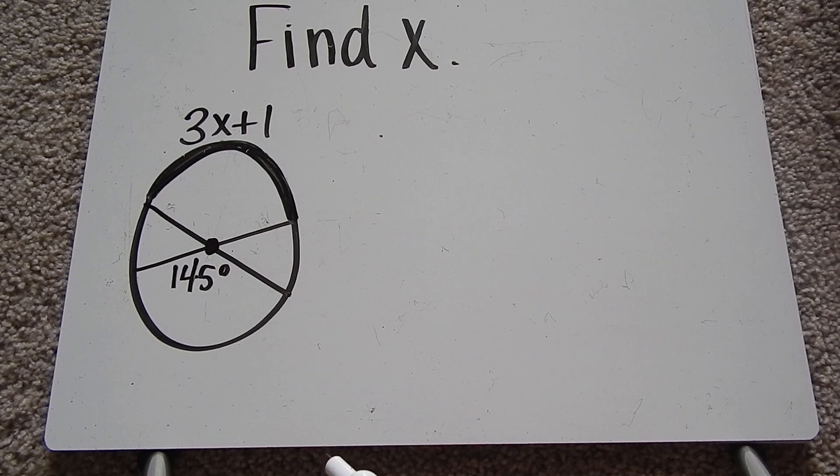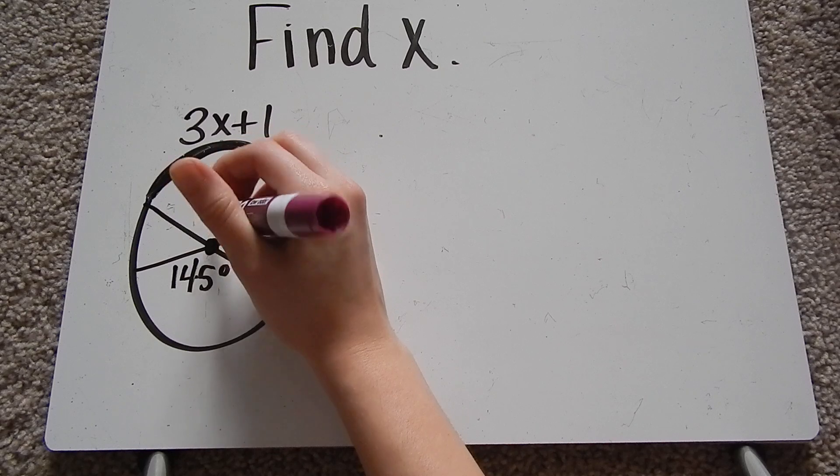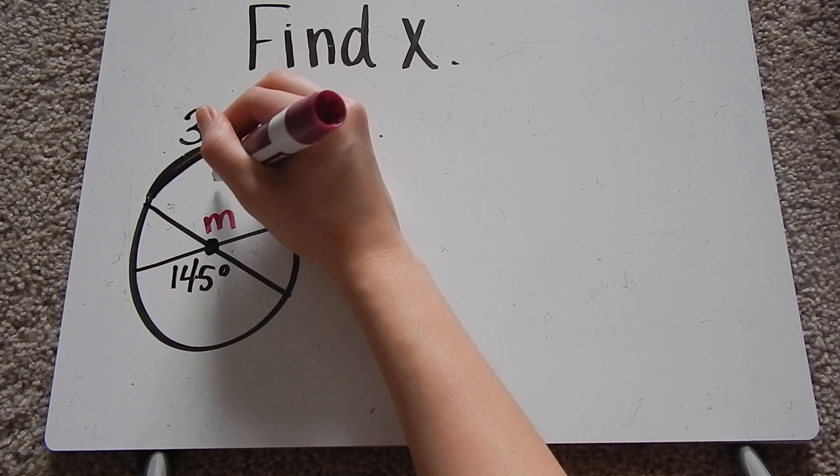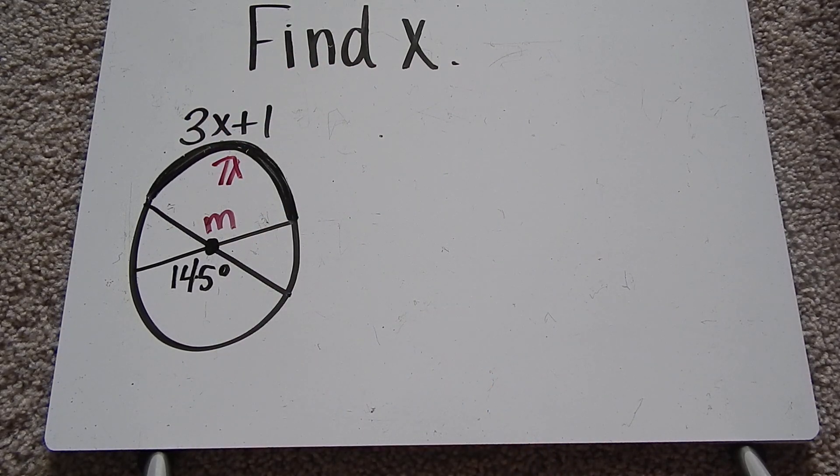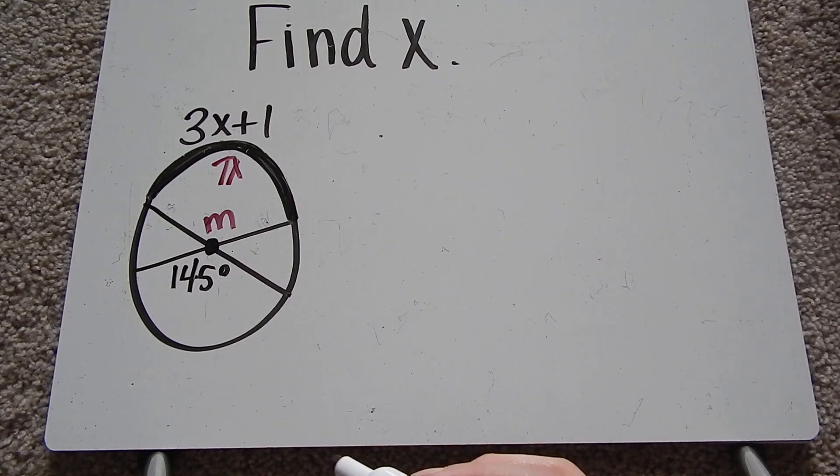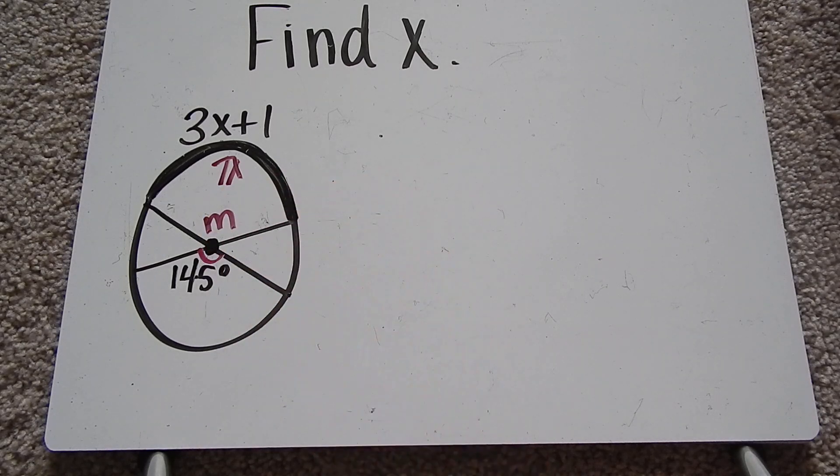So what our notes told us is that this measure, whatever this is, we just call it m, is equal to 3x plus 1. So if we knew what this measure was, then we could try to find x. The problem is we don't know what it is. But we do know that this angle measure is 145 degrees.